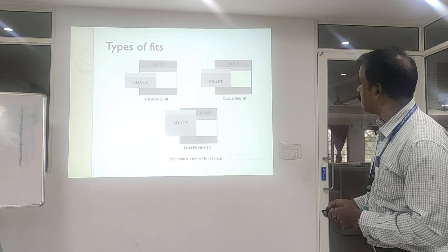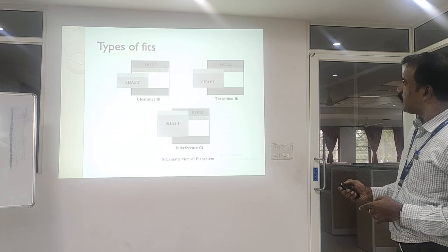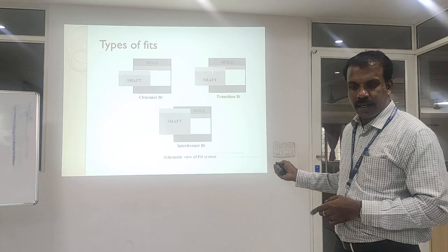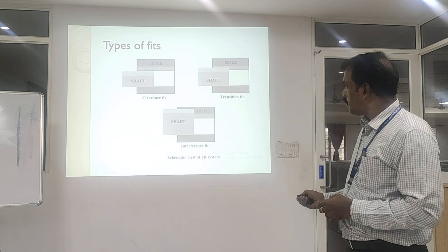The second one is your transition fit. In a transition fit, the maximum diameter of the shaft will be greater than the minimum diameter of the hole. So there will be some amount of overlapping between the shaft and the hole. In a transition fit, the dimensions can be adjusted so that the hole and shaft can be properly mated.